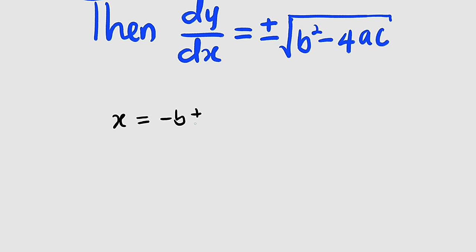minus b plus or minus the square root of b² - 4ac divided by 2a. From here we can multiply both sides by 2a just to clear the fractions.